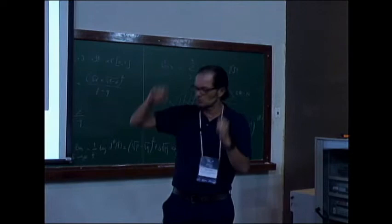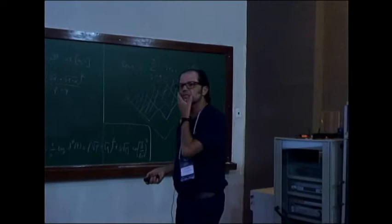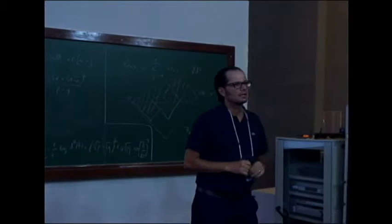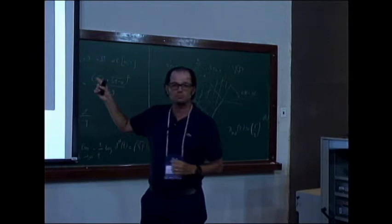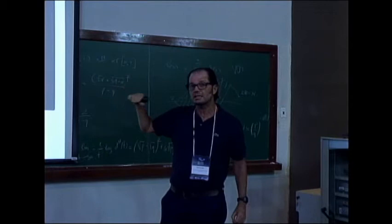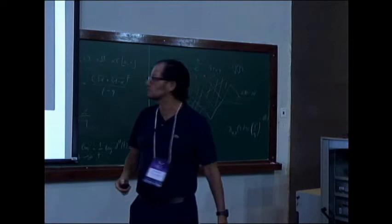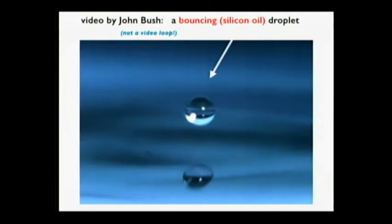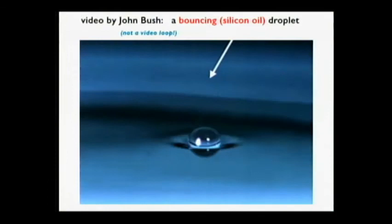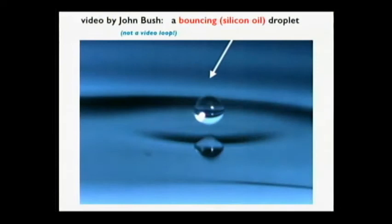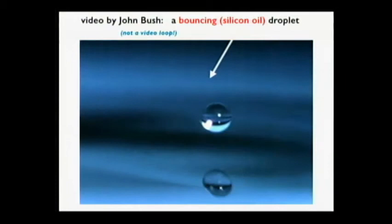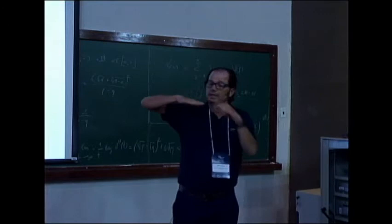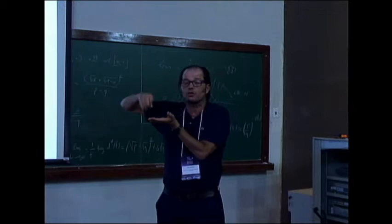The second video is silicon oil because it has good surface tension properties and good viscosity properties. This is a droplet of silicon oil on a bath of silicon oil, and the droplet levitates, bounces forever. It can be because the bath is oscillating at 50 to 80 hertz.